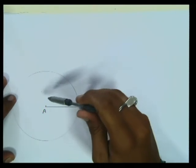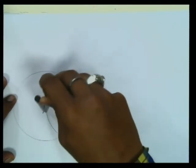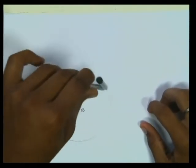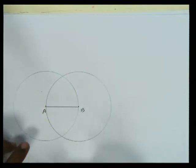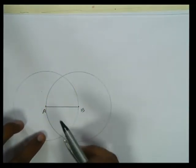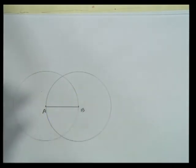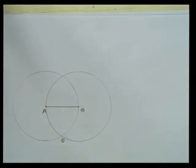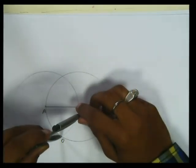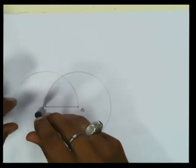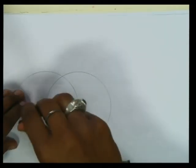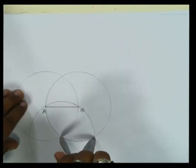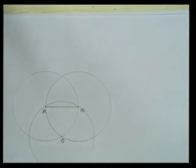On the other side, taking B as center and AB as radius, we draw the second circle. Where both circles intersect each other on the lower side, we mark that center as point O. From this center O, we draw the third circle with the same radius AB.